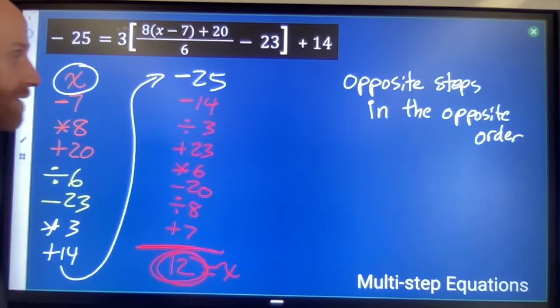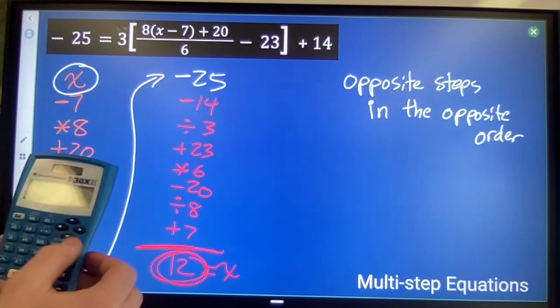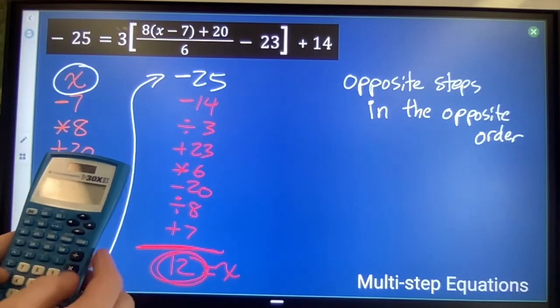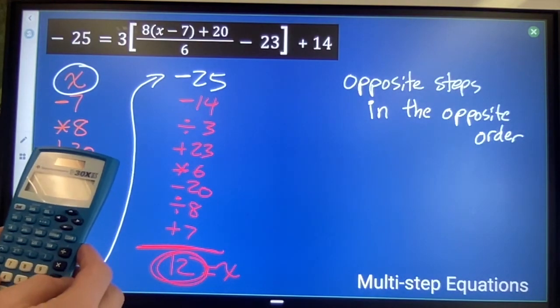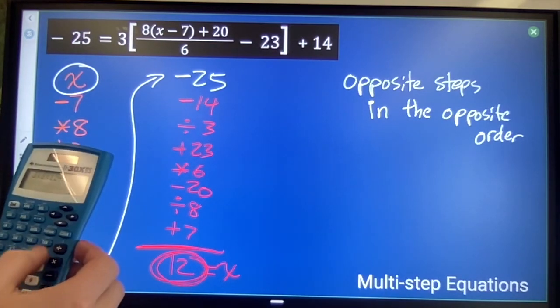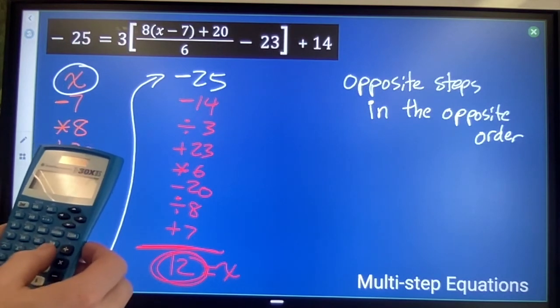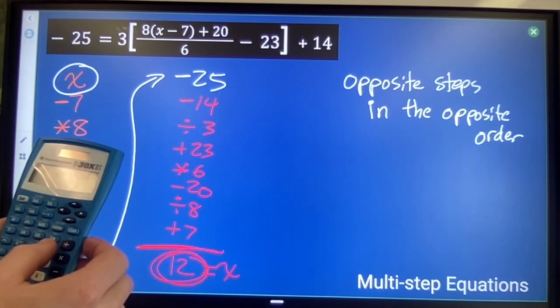I'll just type all this in the calculator, this time not step by step, but all at once. So, I'm going to type 3, parenthesis, 8, another parenthesis, 12 minus 7, close that parenthesis, plus 20, close that parenthesis.